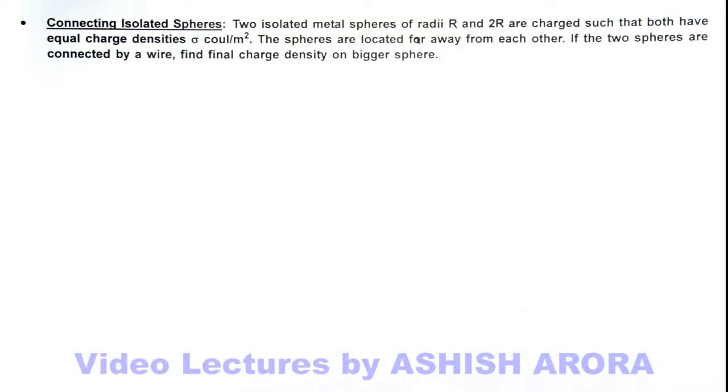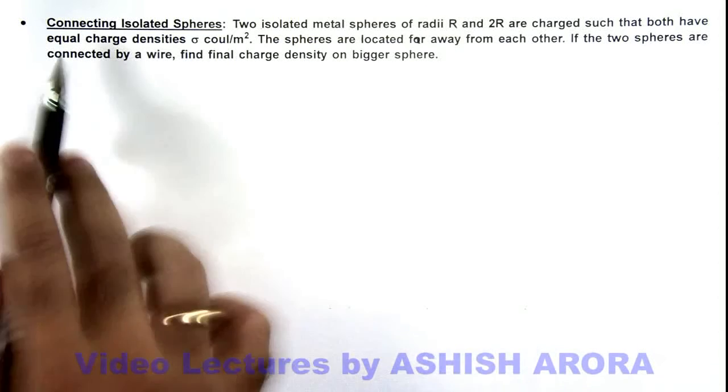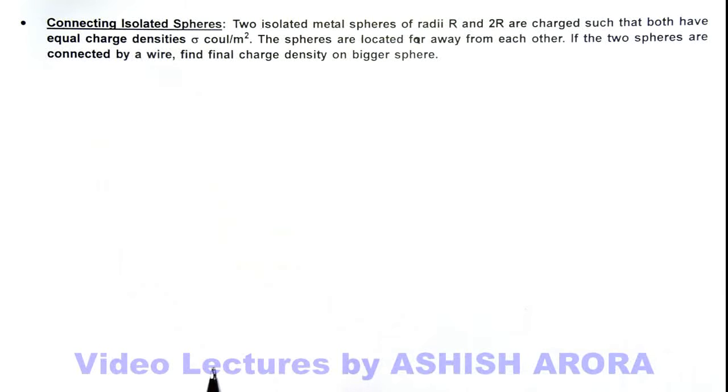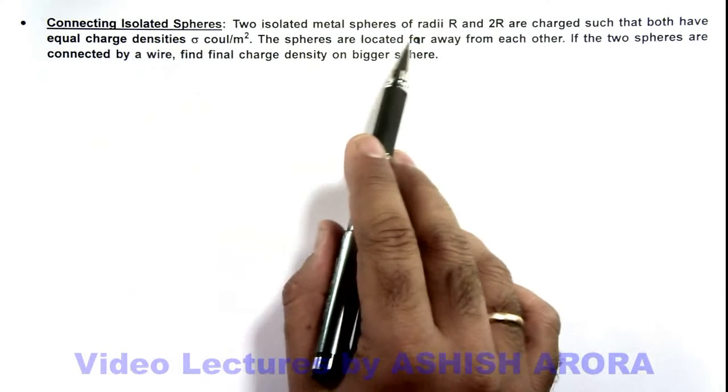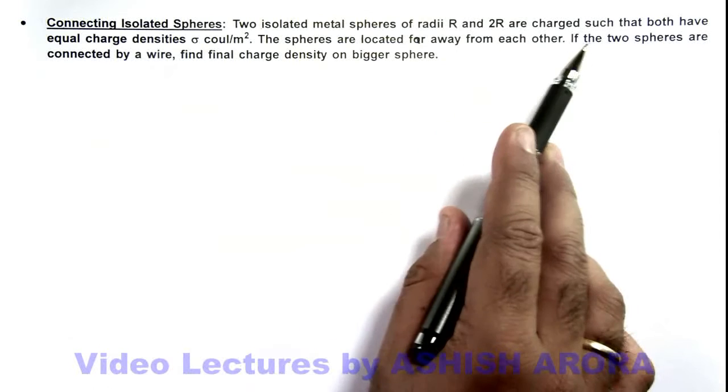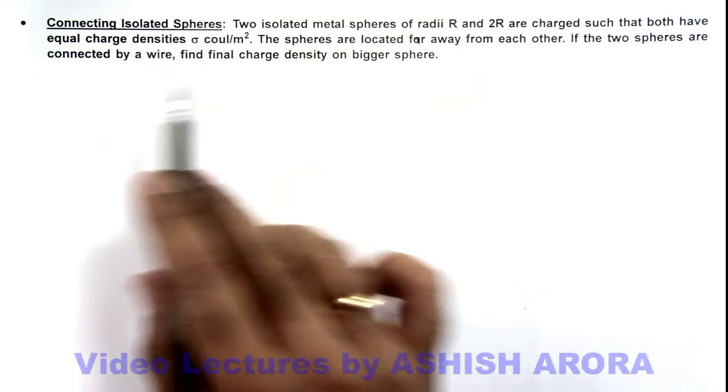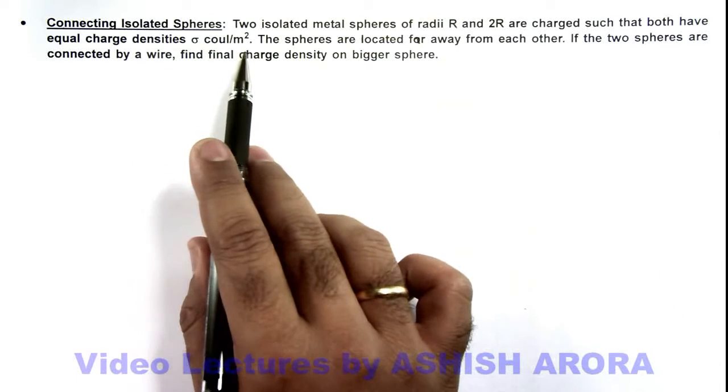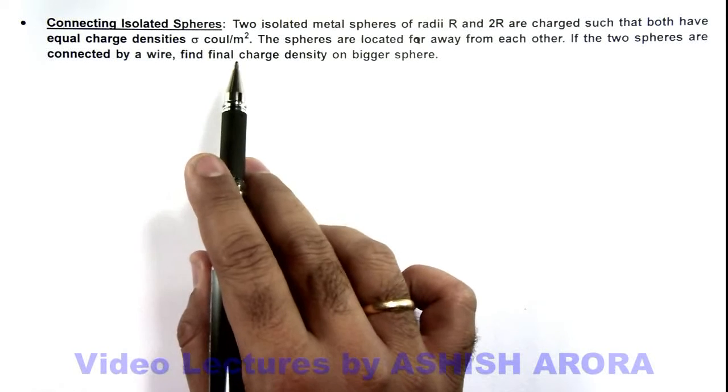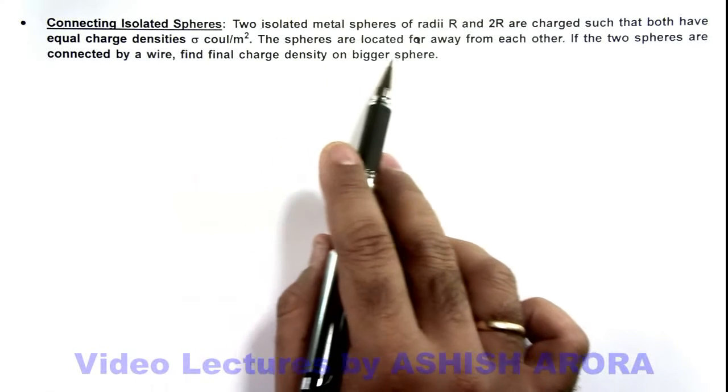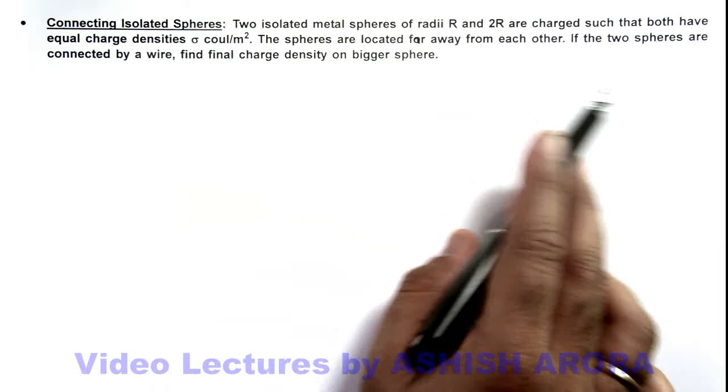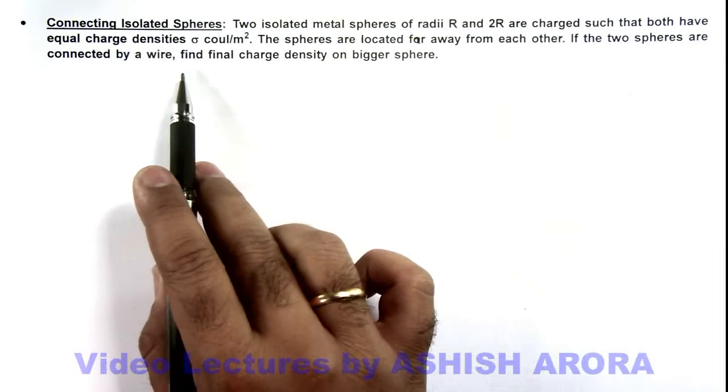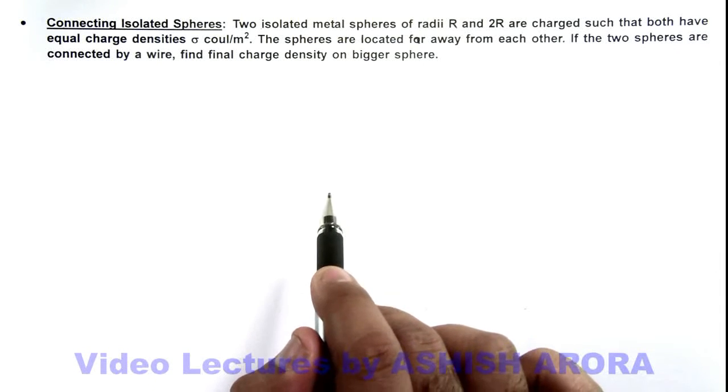In this illustration, we'll study connecting isolated spheres. We are given that two isolated metal spheres of radii R and 2R are charged such that both have equal charge density sigma coulomb per meter square. The spheres are located far away from each other. If the two spheres are connected by a wire, we are required to find the final charge density on the bigger sphere.